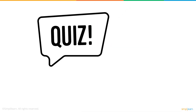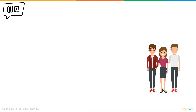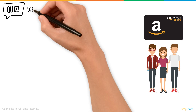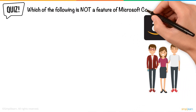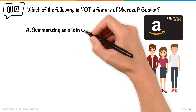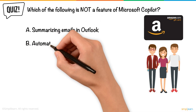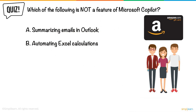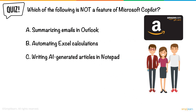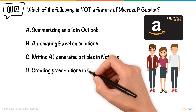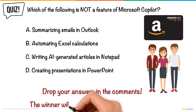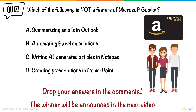Here's a quick quiz — one lucky winner who answers correctly in the comments will receive a 500-rupee Amazon voucher. Which of the following is not a feature of Microsoft Copilot? A. Summarizing emails in Outlook. B. Automating Excel calculations. C. Writing AI-generated articles in Notepad. D. Creating presentations in PowerPoint. Drop your answers in the comments — the winner will be announced in the next video.